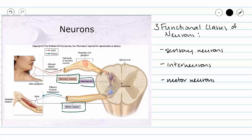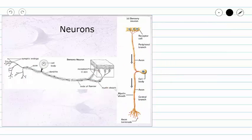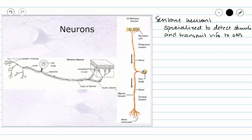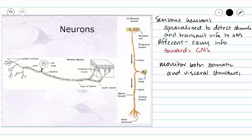Let's take a closer look at each category. Sensory neurons are specialized to detect stimuli and transmit information to the central nervous system. They are afferent, which means that we take information from the periphery and conduct that information towards the CNS. Our sensory neurons begin in almost every organ, so they can monitor both somatic and visceral structures.